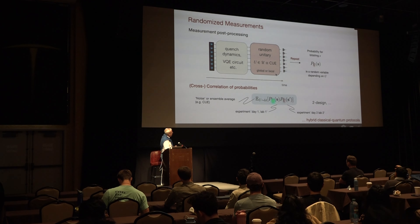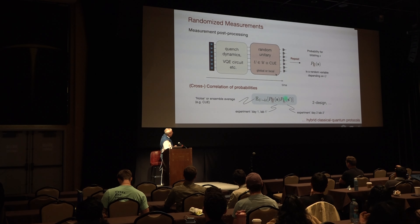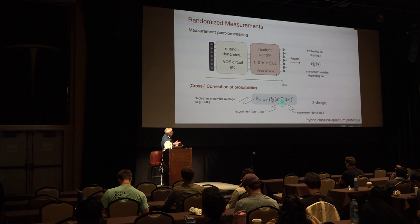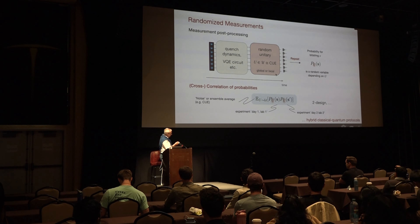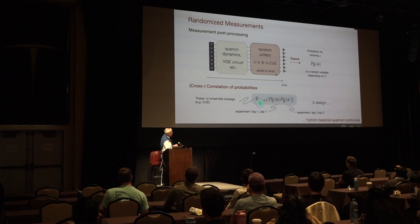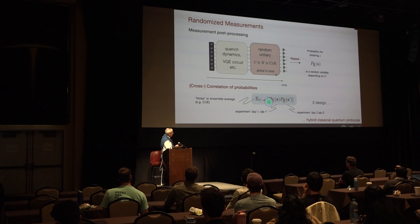Notice that this could be an experiment on day one in lab one, and this could be an experiment on day two in lab two. These are the quantities we're interested in. The Rényi entropy was a particularly simple example of all of that, and then using the circular unitary ensemble, t-designs come in. This average we have is really a classical average, and for this classical part we pay the price.